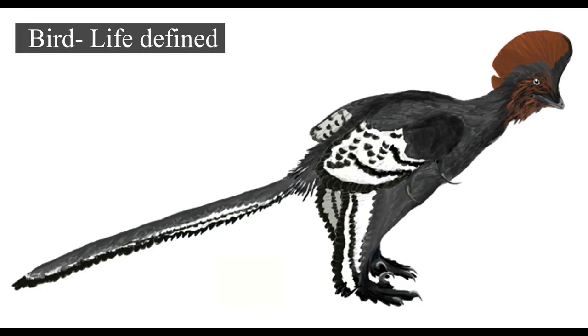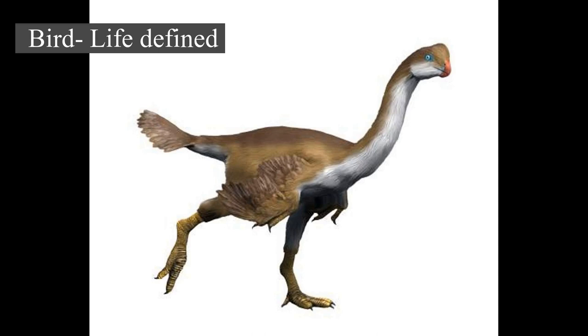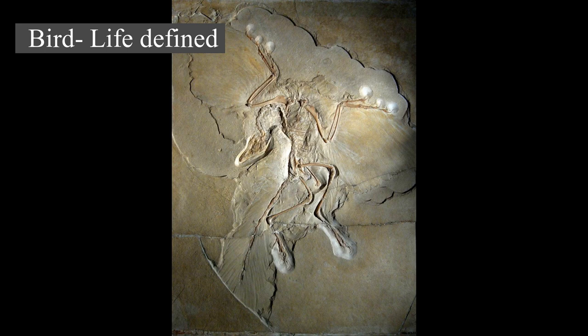Birds are feathered theropod dinosaurs and constitute the only known living dinosaurs. Likewise, birds are considered reptiles in the modern cladistic sense of the term, and their closest living relatives are the crocodilians. Birds are descendants of the primitive avialans whose members include Archaeopteryx, which first appeared about 160 million years ago in China. According to DNA evidence, modern birds' neornithes evolved in the middle to late Cretaceous and diversified dramatically around the time of the Cretaceous-Paleogene extinction event 66 MYA, which killed off the pterosaurs and non-avian dinosaurs.